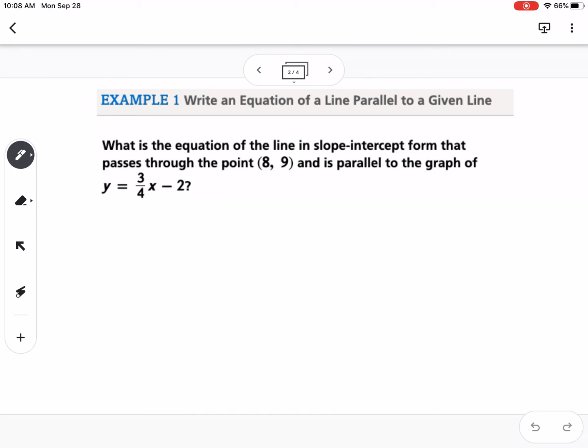Okay, so first example says, what is the equation of the line in slope-intercept form that passes through the point (8, 9) and is parallel to the graph of y equals 3/4 x minus 2?